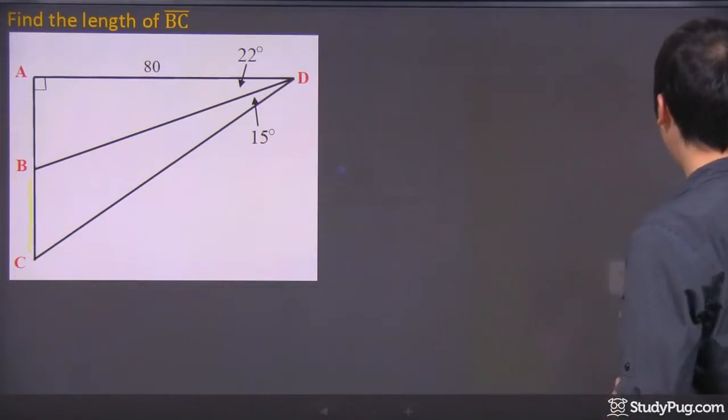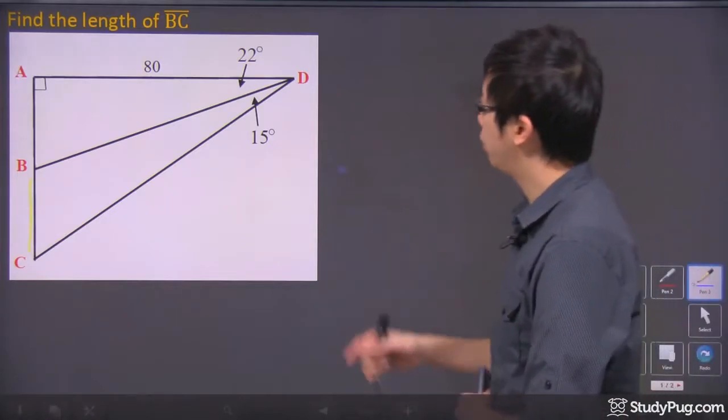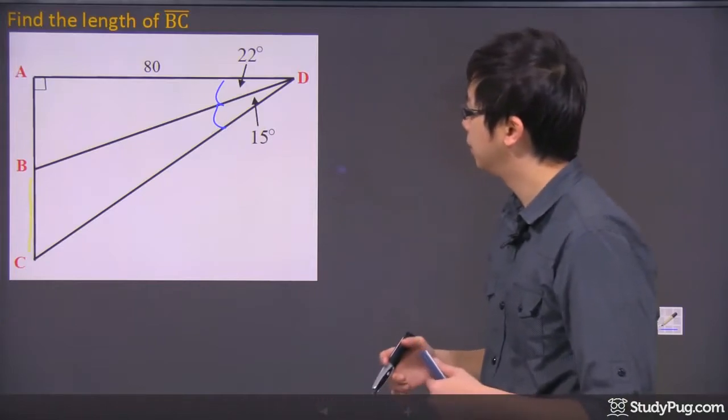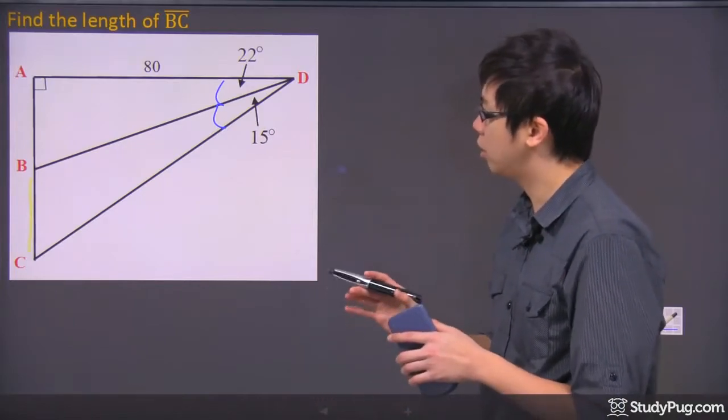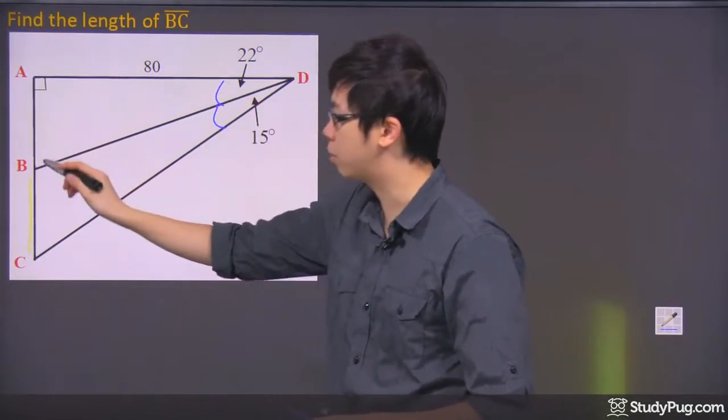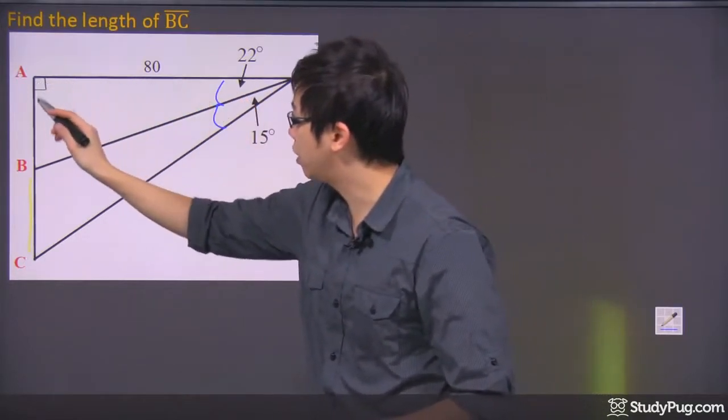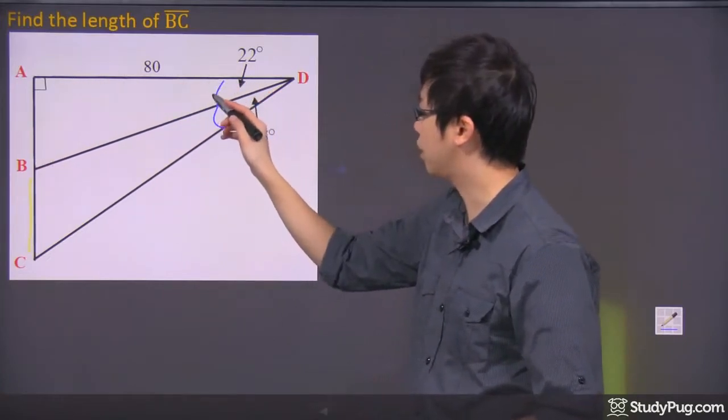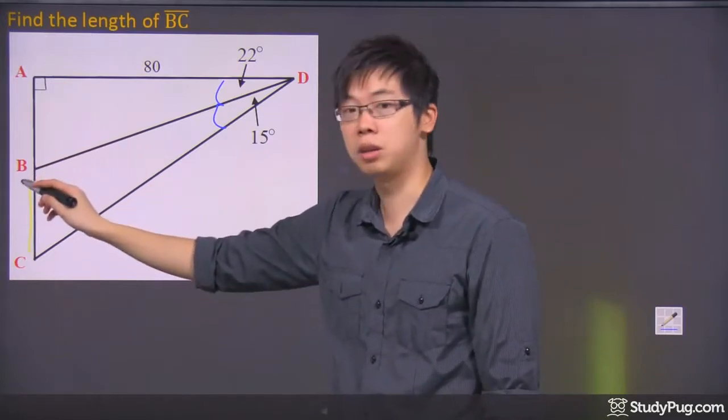So how do we know the length from there to there? We only know the angle over here is 22, and this angle here is 15. But if you look in different ways, you can actually see there's one right triangle right here. So you can actually find the length from A to B, because you know the side 80, right? And if you know this angle right here, maybe you can find the length A to B.